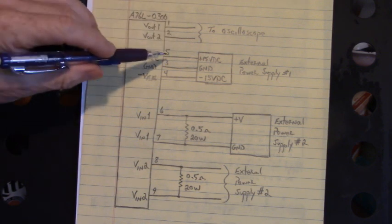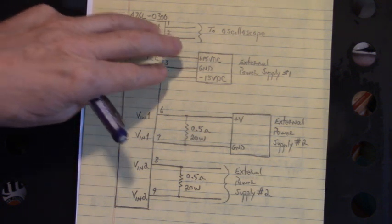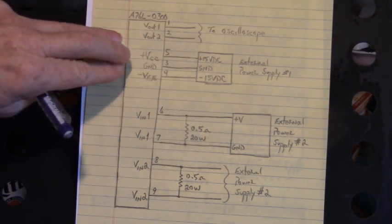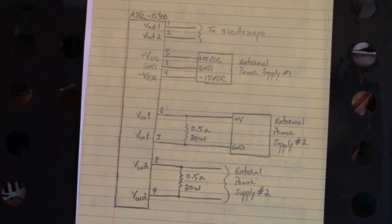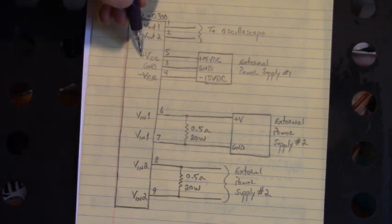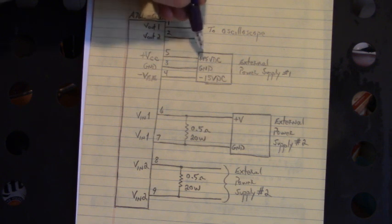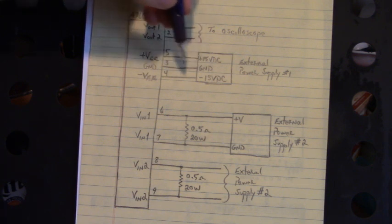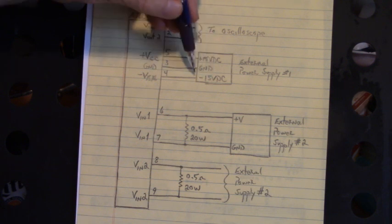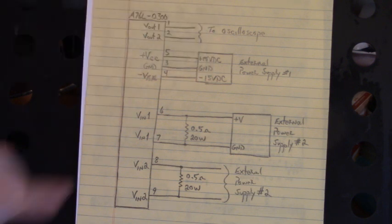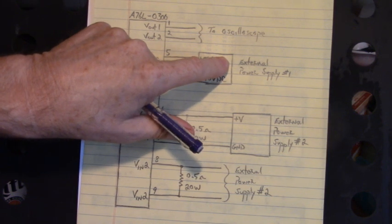Now pin 5, 3 and 4 are the power supply connections to power up that isolation amplifier module. Pin 5 is plus 15 volts DC. Pin 3 is ground. And pin 4 is minus 15 volts DC. Again, from an external power supply.